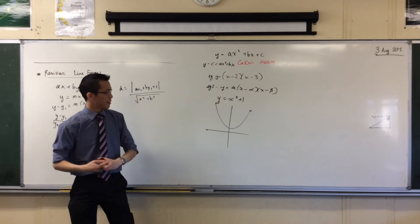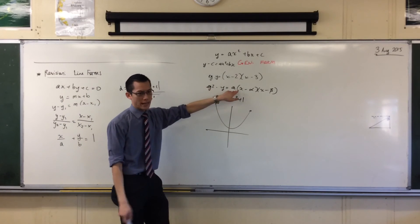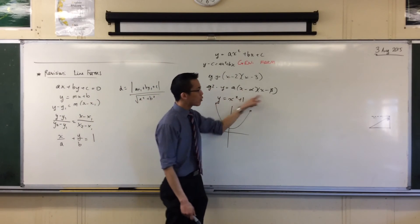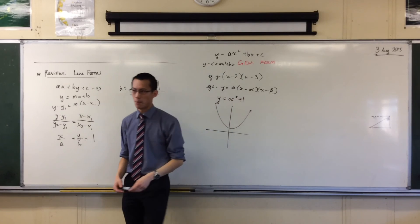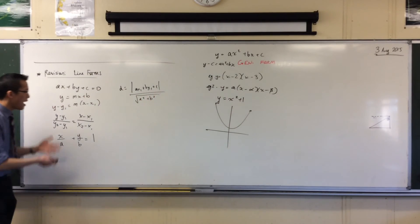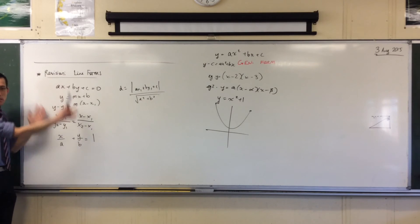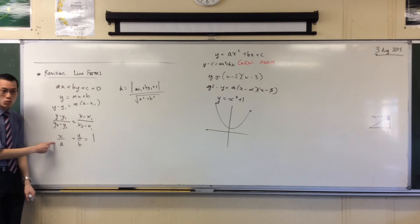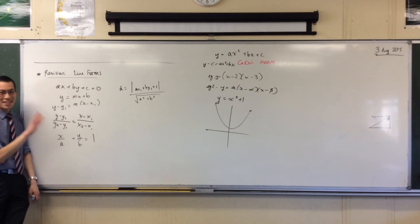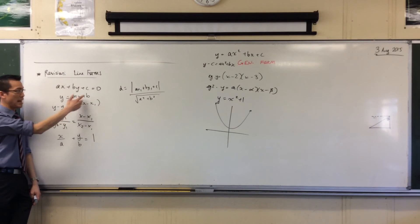So being that a whole bunch of quadratics do not have roots, right? Many quadratics cannot exist in that form. Whereas, every straight line can be put in one of these forms, right? Because they will all, except for horizontal and verticals, they're a bit special. They're always going to have a couple of intercepts.